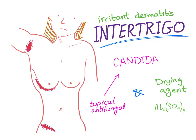Intertrigo — the term 'intertriginous' is derived from it, which literally means between two moist parts of the skin. Intertrigo is a condition; it is basically an irritant dermatitis.